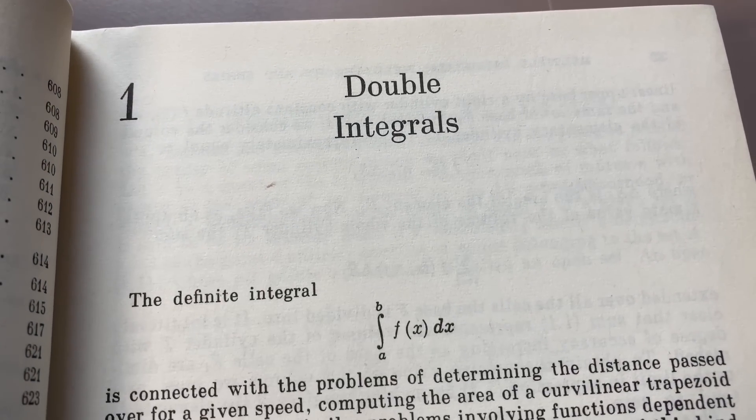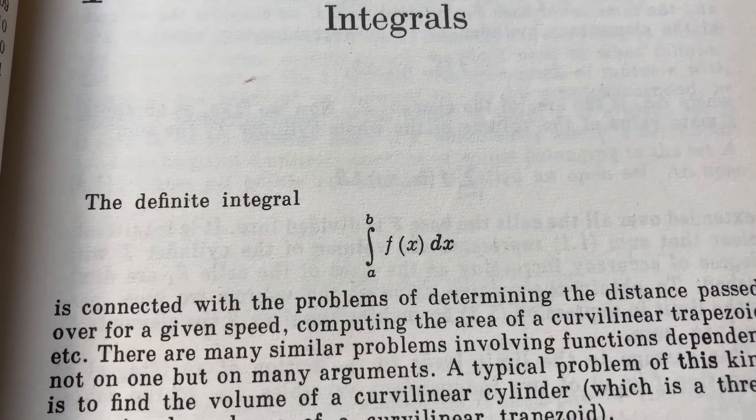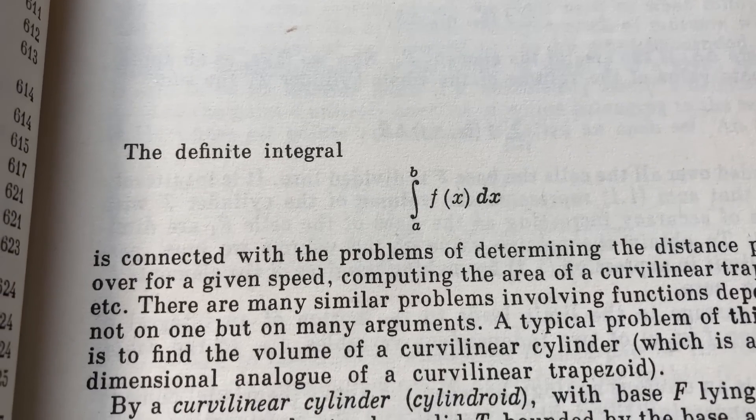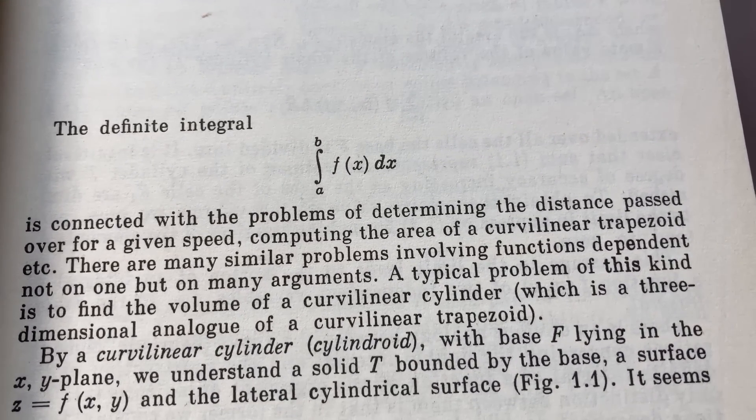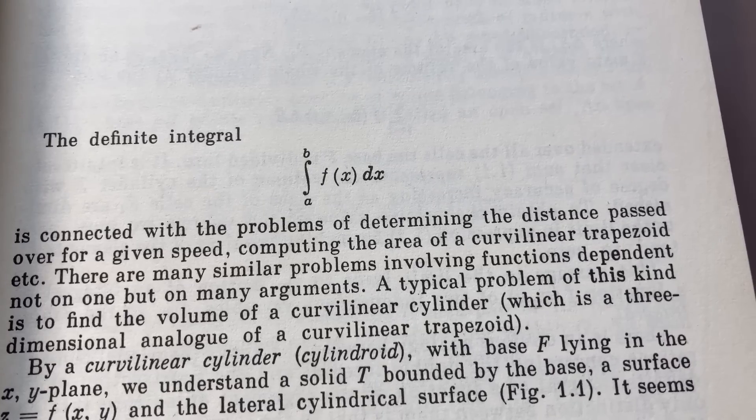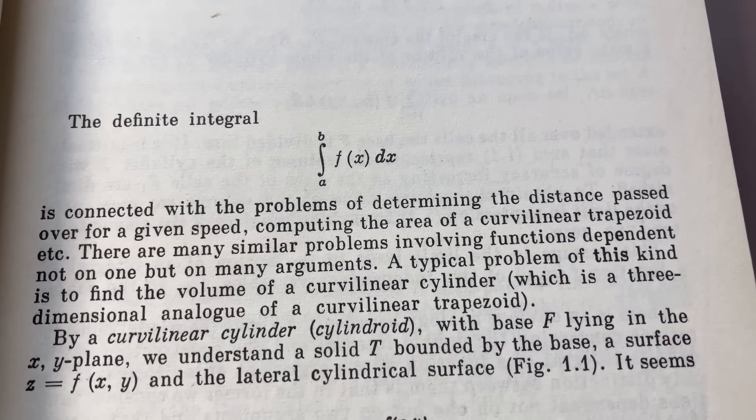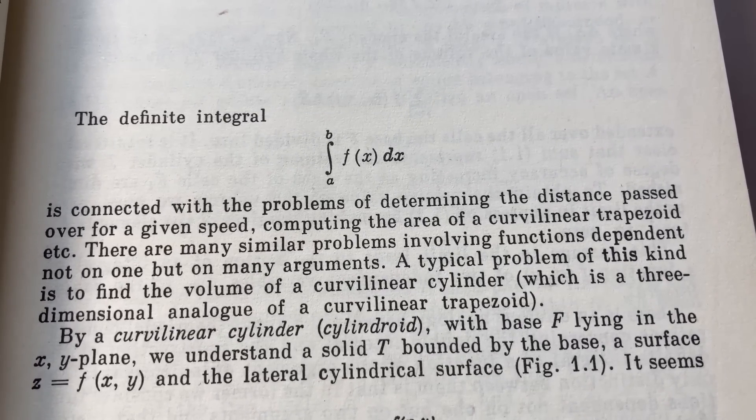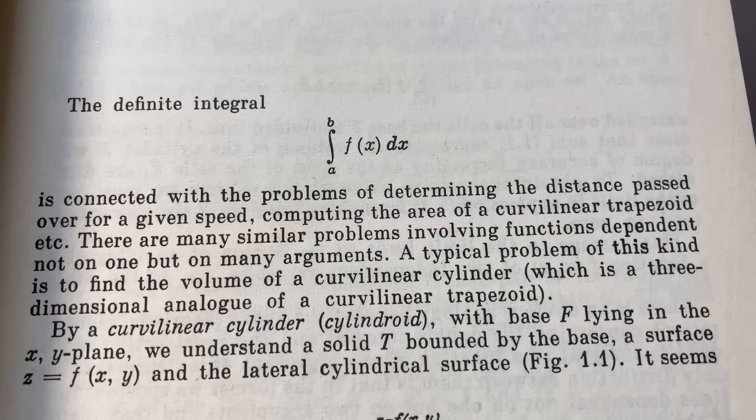Here's the very first chapter on double integrals. The definite integral, the integral of f(x) dx from a to b, is connected with the problems of determining the distance passed over a given speed, computing the area of a curvilinear trapezoid, etc. There are many similar problems involving functions dependent not on one, but on many arguments. A typical problem of this kind is to find the volume of a curvilinear cylinder, which is a three-dimensional analog of a curvilinear trapezoid.